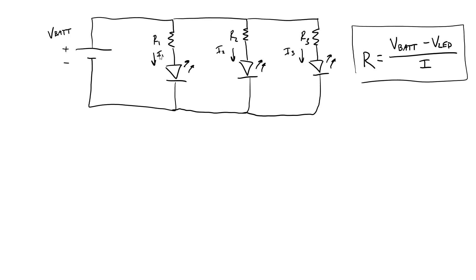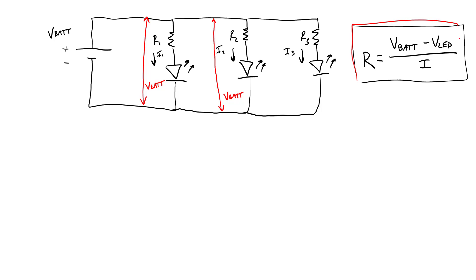This process is actually pretty simple for multiple LEDs because it's no different than doing it for a single LED. Since all the branches of this circuit are in parallel, the voltage drop over them is equal to the battery voltage. So we can apply this equation separately to each branch to solve for the individual current limiting resistor value for each LED, as long as we know the forward voltage drop across that LED. If you have LEDs with different voltage drops — for example, different colors — you can choose the resistor value for each one to get the current you want.